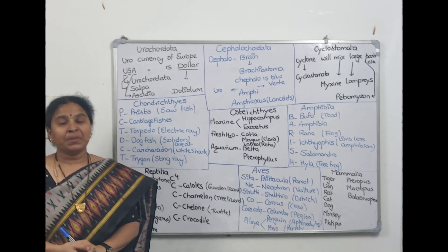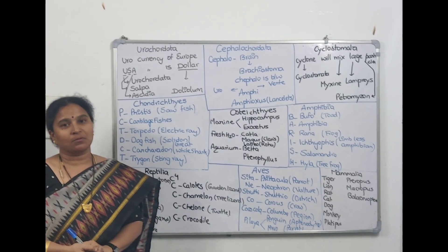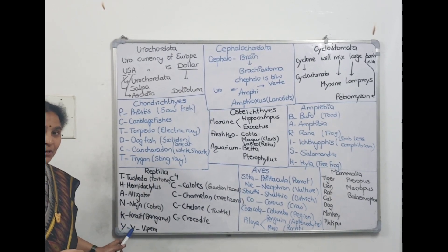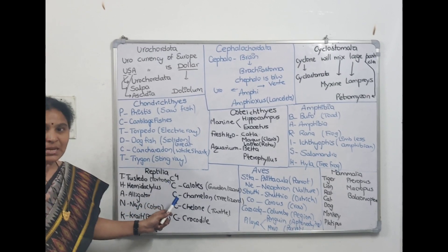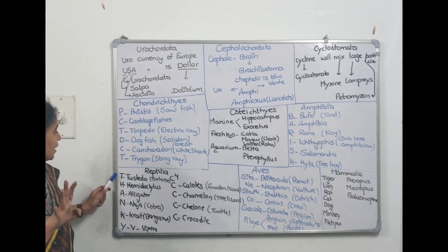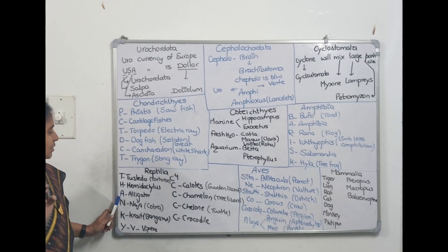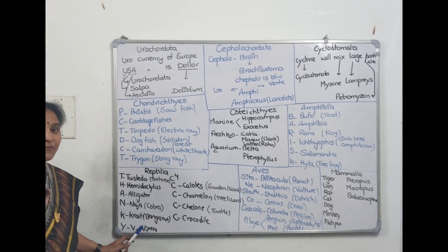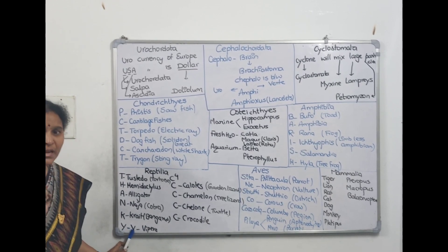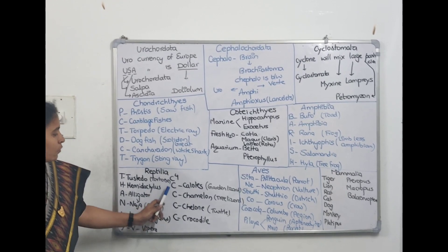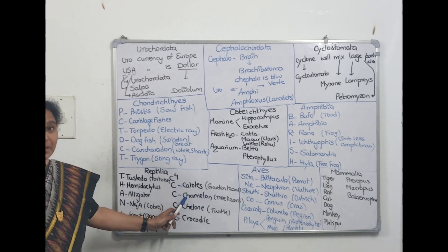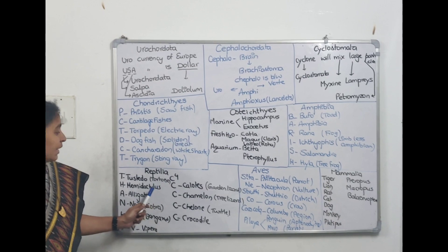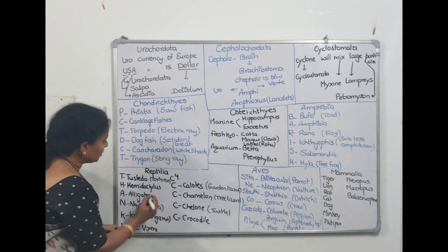Now coming to the next class, Reptilia. The code for memorizing the examples of Reptilia is 'Thank You C4.' T-H-A-N-K, then U converted to V, and C4 means C written four times. T for Testudo, H for Hemidactylus, A for Alligator, N for Naja, K for Krait. V for Vipera. The four C's are: Calotes, Chameleon, Chelone, and Crocodile.